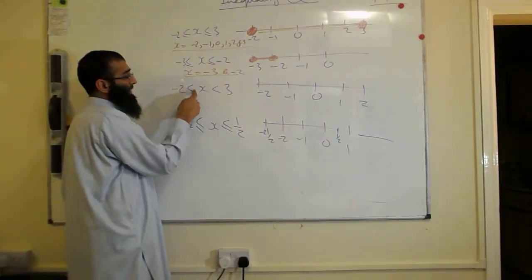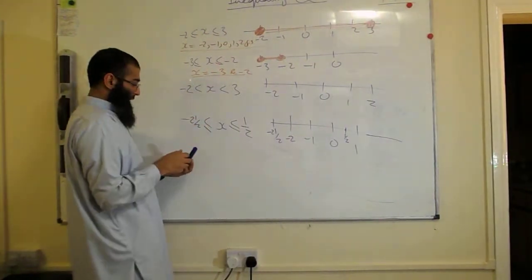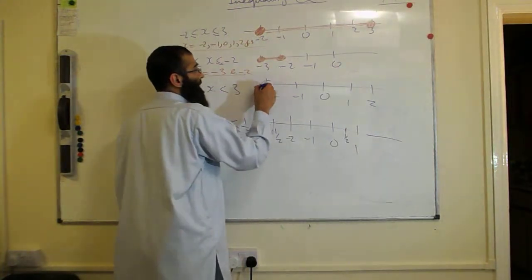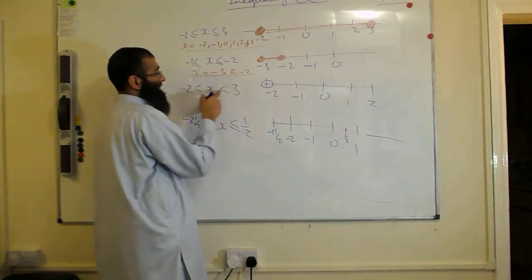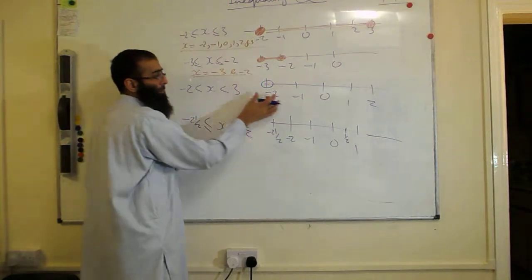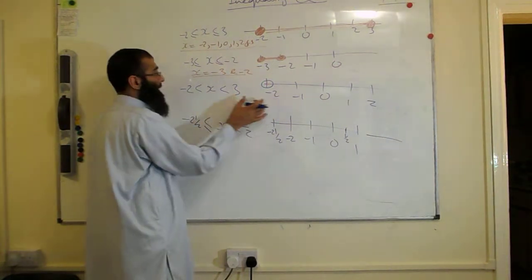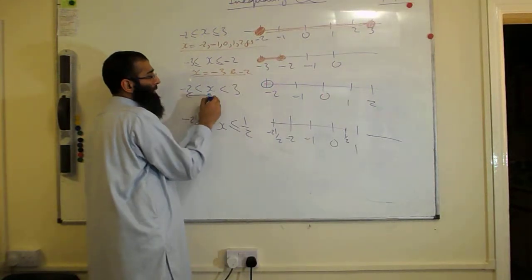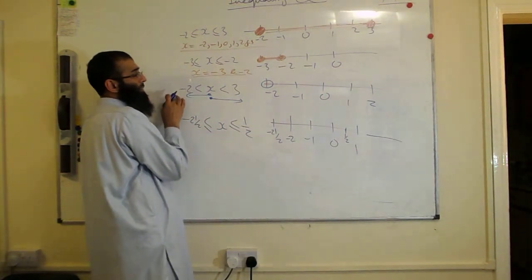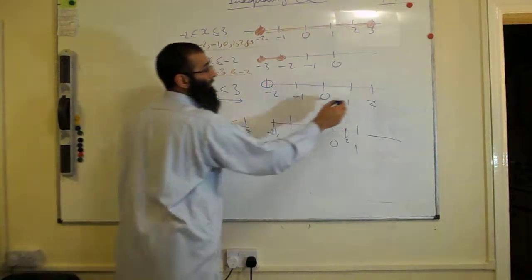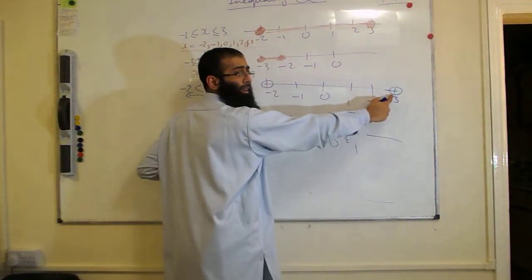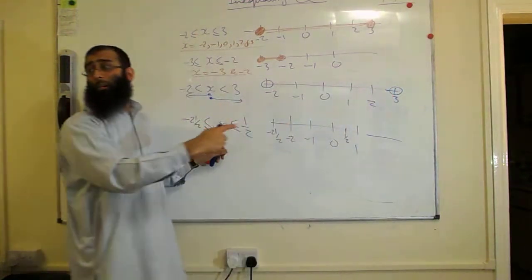The next question we have: X is greater than minus 2. So this is the first one here where we have an empty circle because it says X is greater than minus 2. That means minus 2 is not part of our answer. But X must be less than 3, so where's 3? 3 is over here, and that must also be an empty circle because that's not part of our solution. No equal sign.